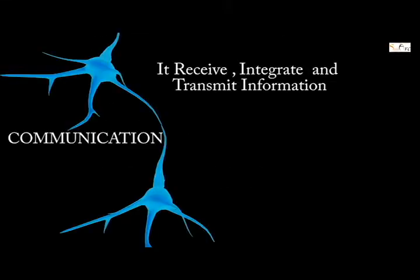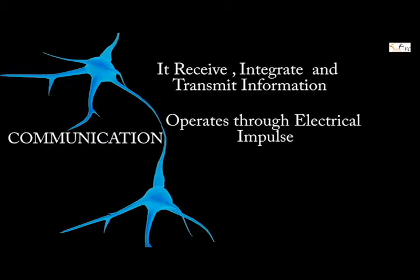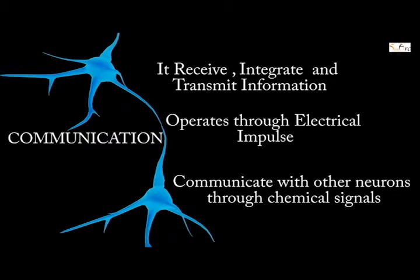Neurons receive, integrate, and transmit information. They operate through electrical impulses and communicate with other neurons through chemical signals.